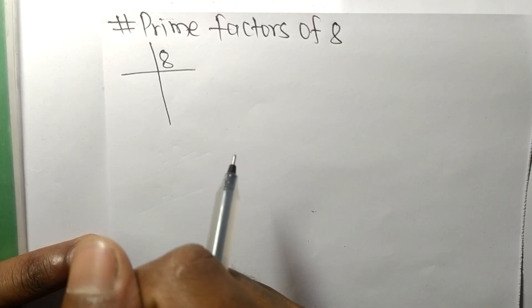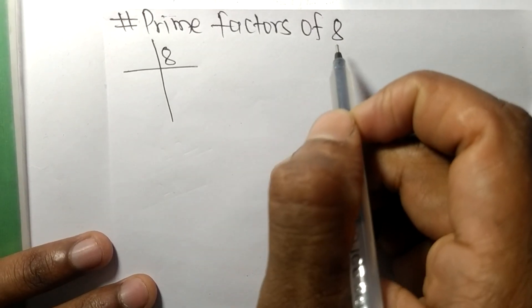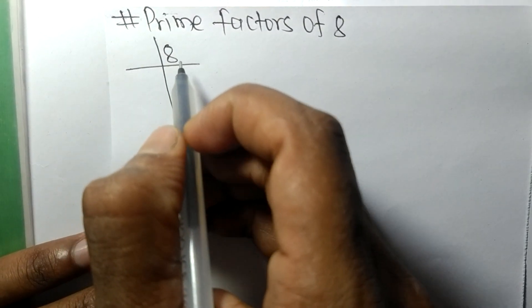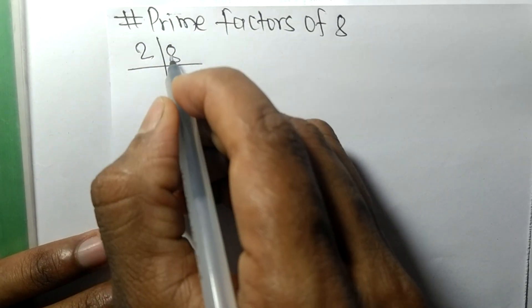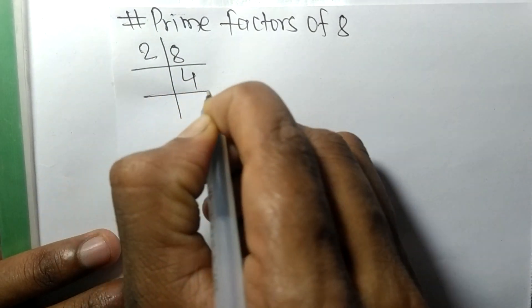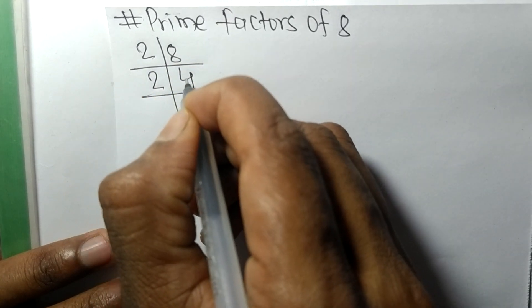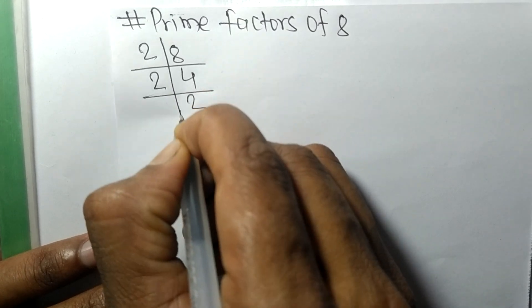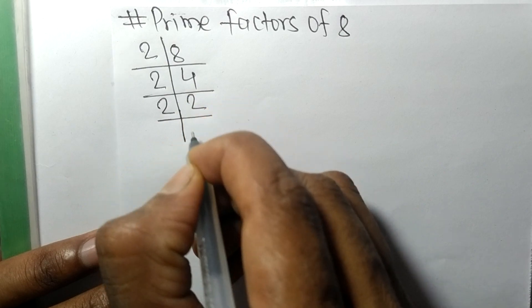Today in this video we shall learn to find the prime factors of 8. It is an even number, so it is divisible by 2. Dividing it by 2 we get 4. Now again 4 is divisible by 2, so 4 divided by 2 we get 2. Again 2 is divisible by 2.